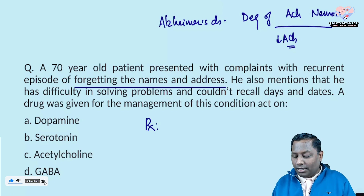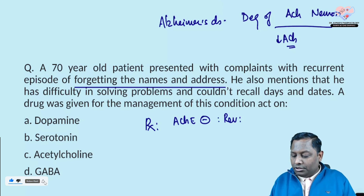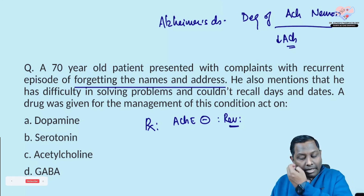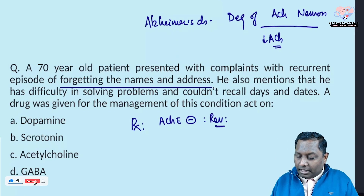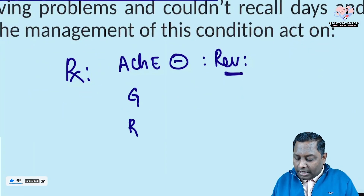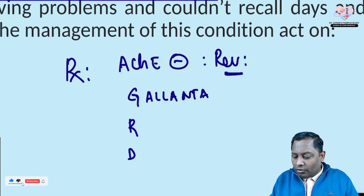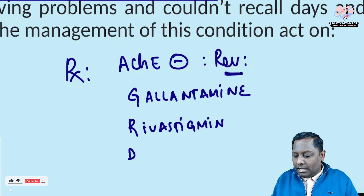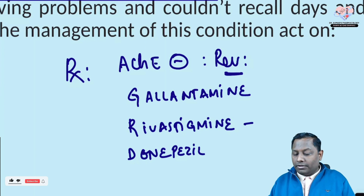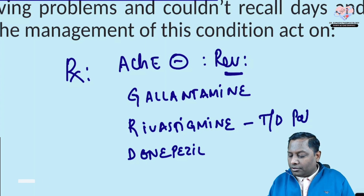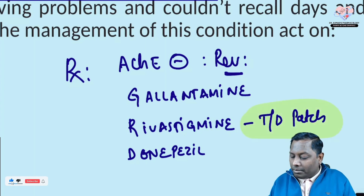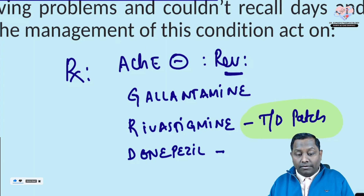Since acetylcholine is already deficient, we try to increase its level by giving acetylcholinesterase inhibitors — specifically reversible acetylcholinesterase inhibitors that are tertiary amines in nature. These agents are remembered by the mnemonic GRD: Galantamine, Rivastigmine, and Donepezil. A 2023 INICET question asked which is preferred if the patient cannot tolerate oral drugs — the answer is rivastigmine, as it is available as a transdermal patch.